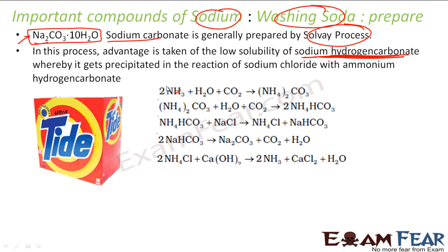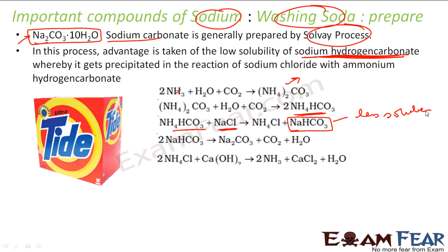In the Solvay process: first, ammonia reacts with water and carbon dioxide to give NH4CO3. Once we have NH4CO3, it reacts again with CO2 and water to give NH4HCO3. Once we have NH4HCO3, we react it with common salt (NaCl), and we get NaHCO3 — sodium hydrogen carbonate. Since sodium hydrogen carbonate is less soluble in the aqueous solution, it precipitates out.